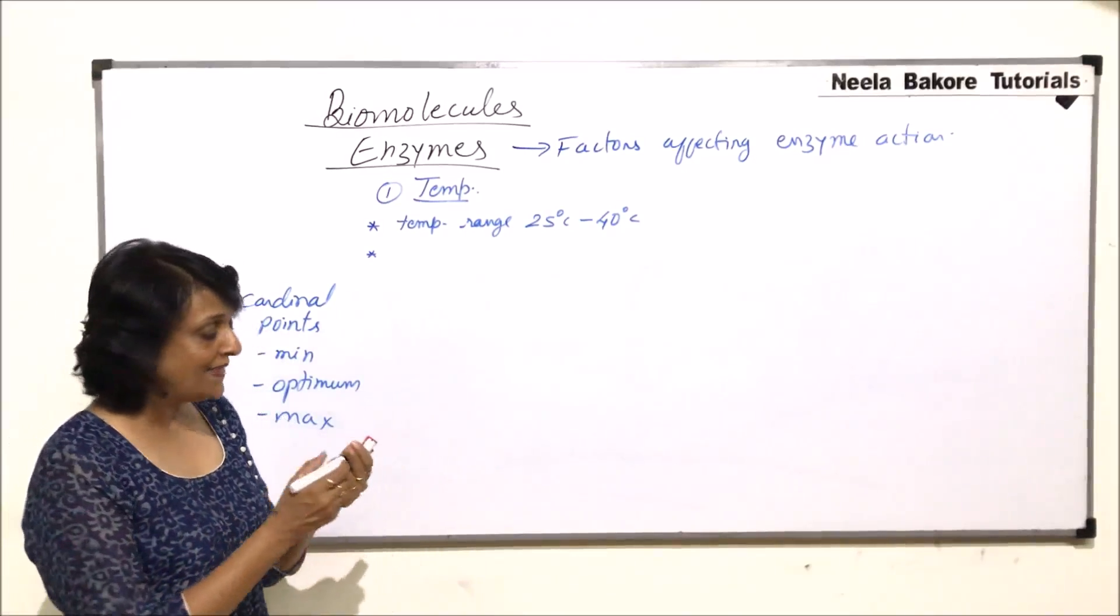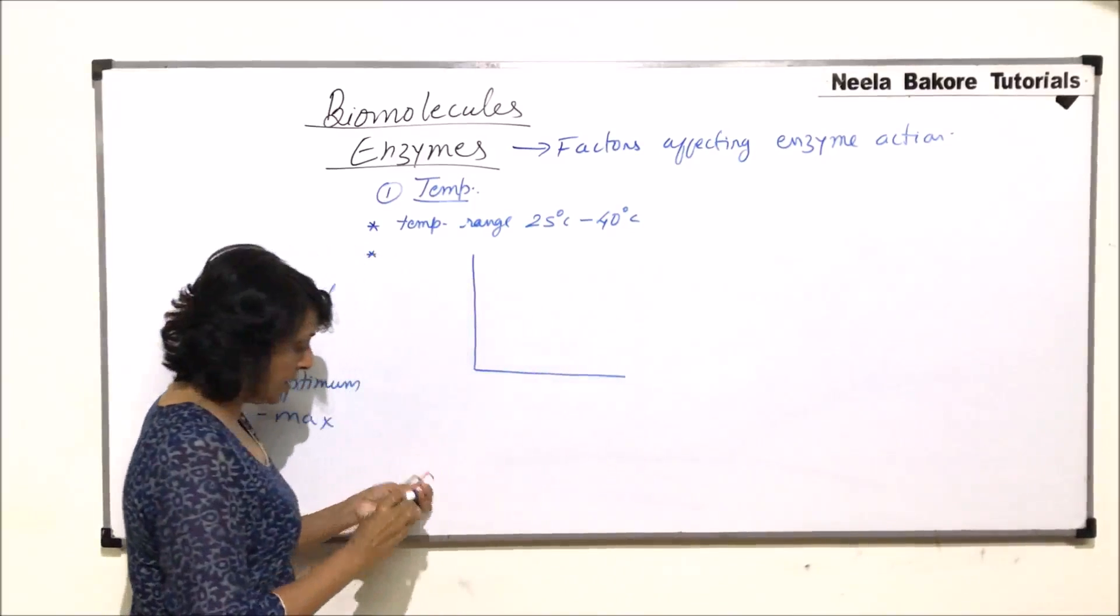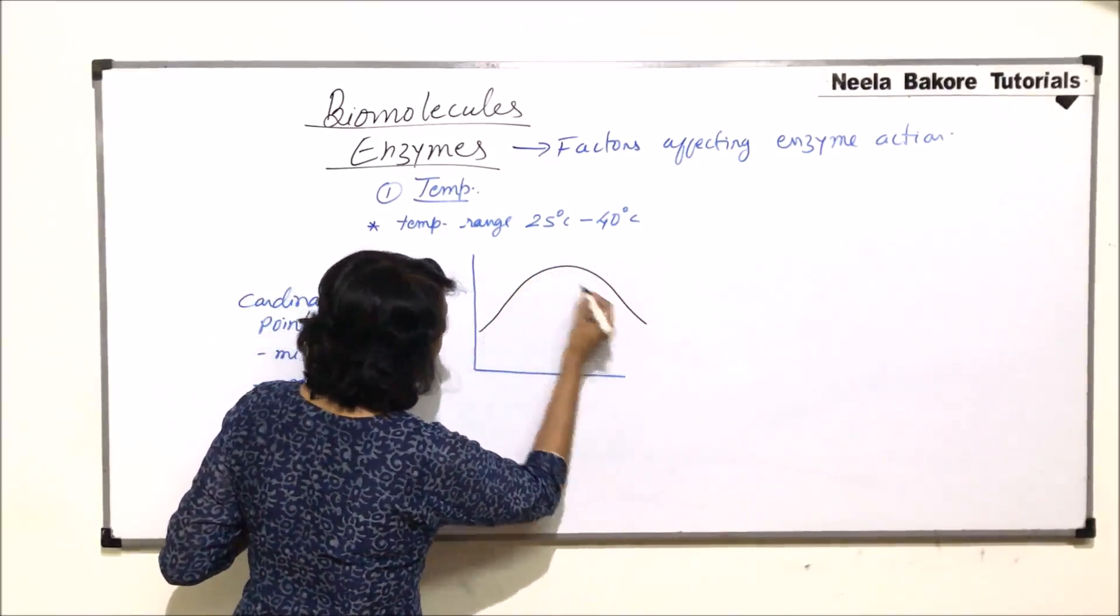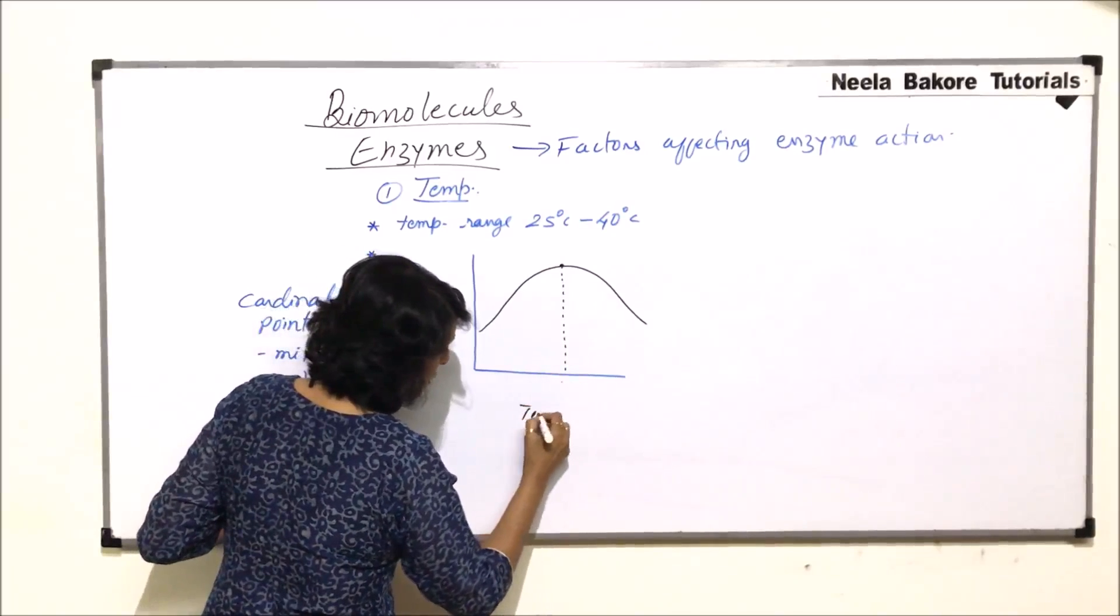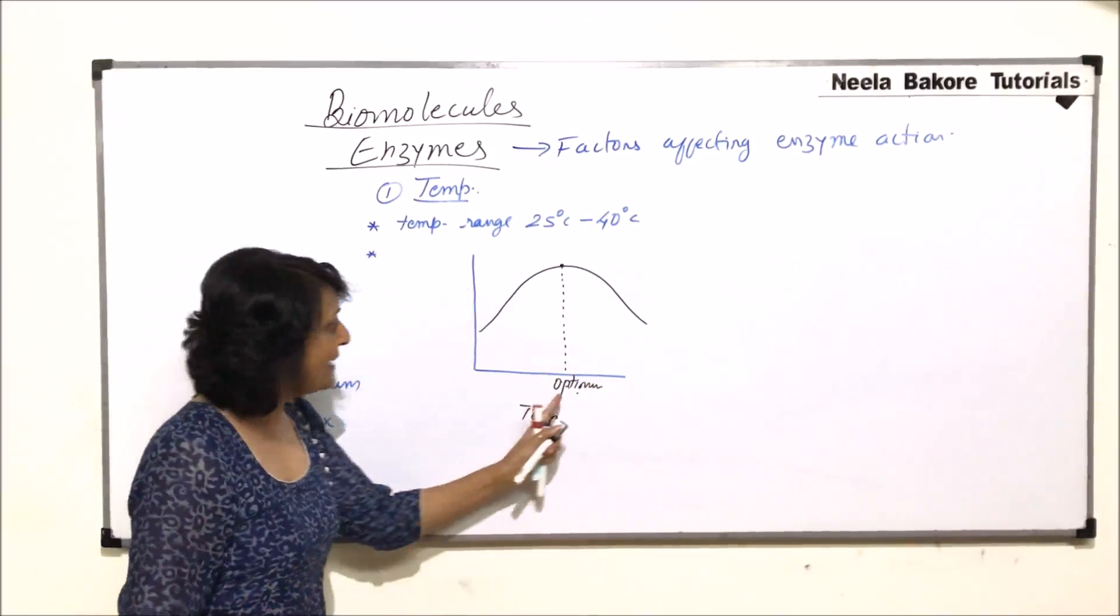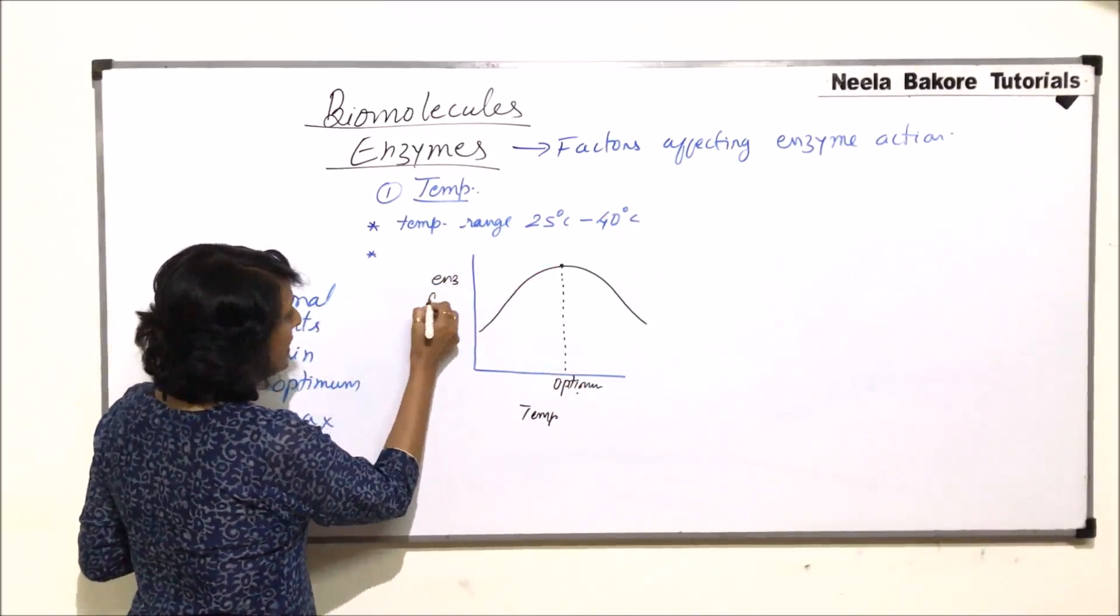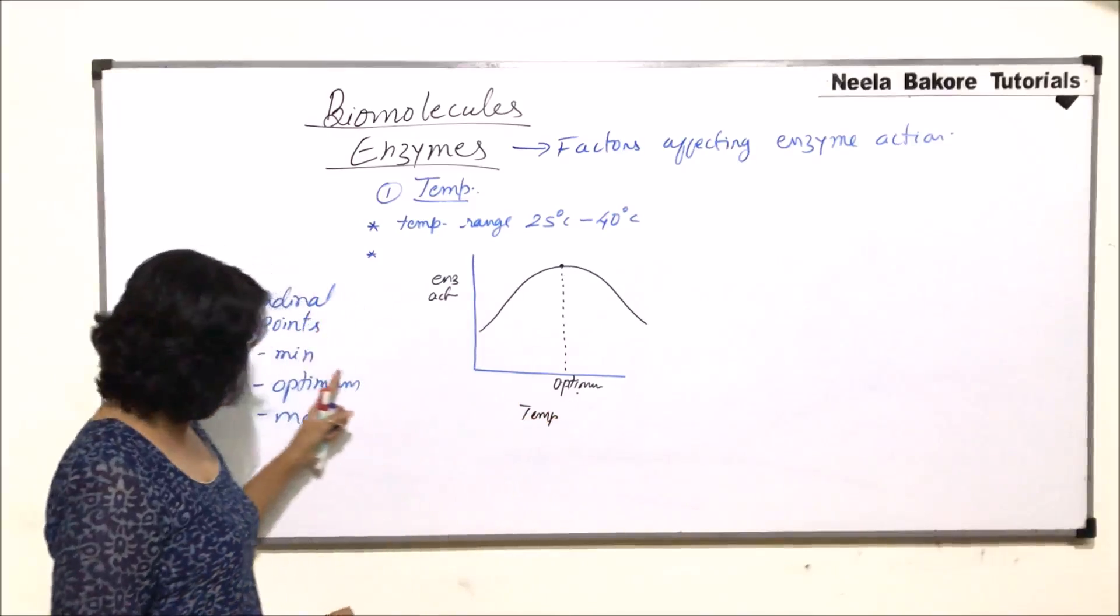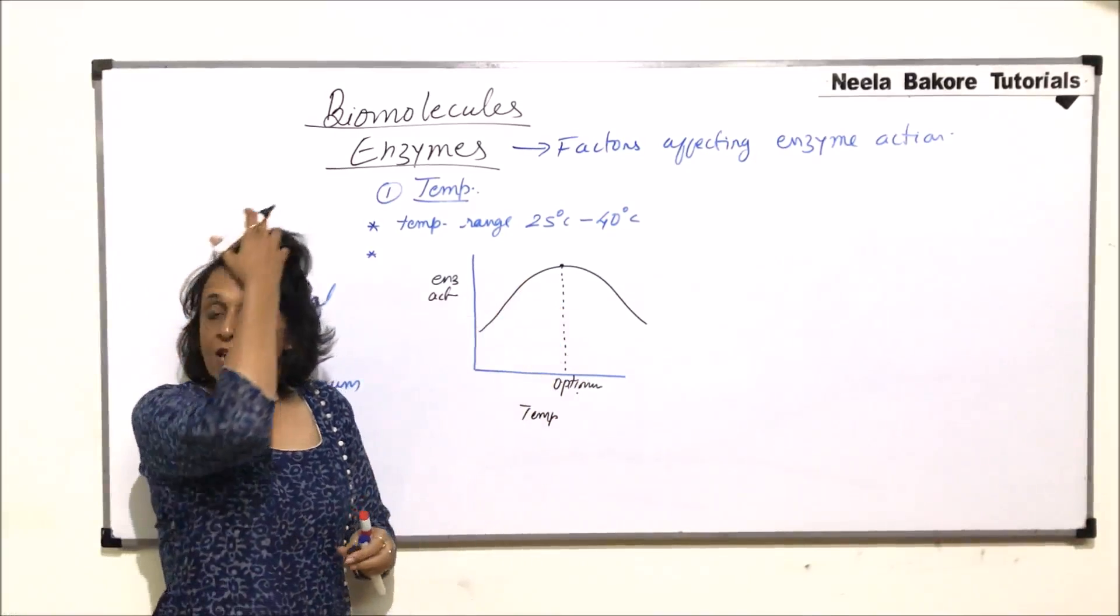If we are taking the example of our body, then what exactly we see is a graph which is like this. With increase in temperature, let us draw this graph. This is the temperature which we call, here we are talking of the temperature, this is the optimum temperature. That means at this temperature, the enzymatic activity is maximum. So this is that temperature which is the optimum temperature, at this enzymatic activity is maximum.